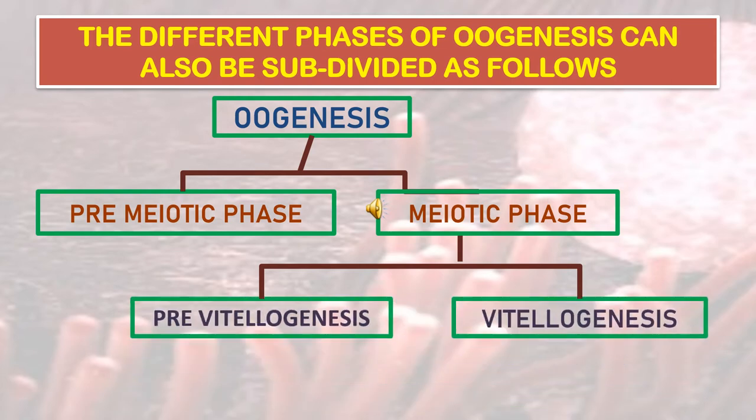The different phases of oogenesis can also be subdivided as follows: oogenesis is divided into a pre-meiotic phase and a meiotic phase, and the meiotic phase is further divided into pre-vitalogenesis and vitalogenesis.